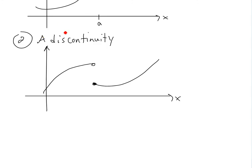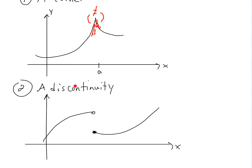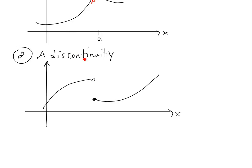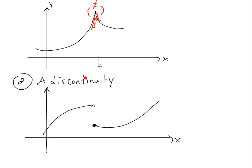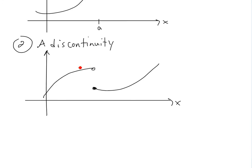The second type of function that is not differentiable is a discontinuous function. If you're at any part where it's just not continuous, this changes the derivative. The derivative from the left side is going to be one value, and the derivative from the right side is going to be a different value.